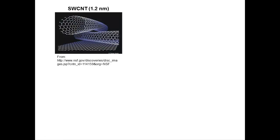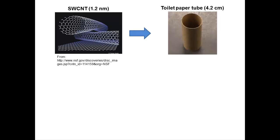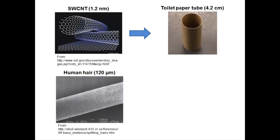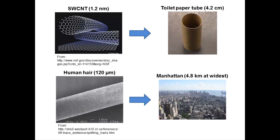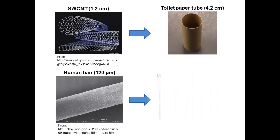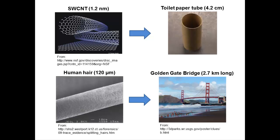To visualize these orders of magnitude differences, we can find natural features or man-made structures that are close to 4.2 kilometers in size. So, if a single-walled carbon nanotube with a diameter of 1.2 nanometers were scaled up to have the same diameter as a toilet paper tube, then a human hair that originally had a diameter of 120 micrometers would be close to the width of Manhattan at its widest when it was scaled up the same amount. That's a big hair! A similar comparison could be made to the Golden Gate Bridge. The scaled-up diameter of the very large hair would be about 1.5 times the length of the bridge.